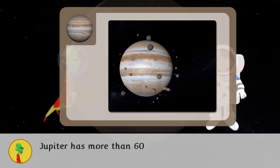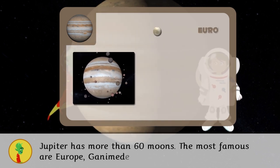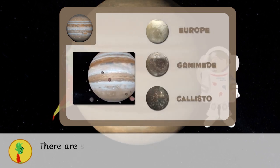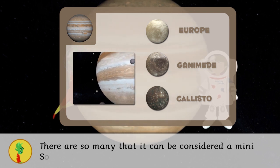Jupiter has more than 60 moons. The most famous are Europa, Ganymede, and Callisto. There are so many that it can be considered a mini solar system.